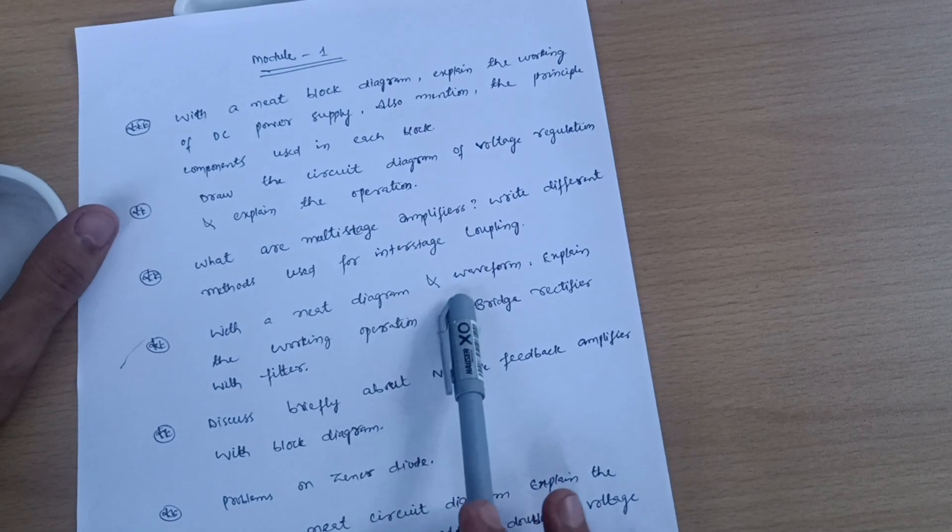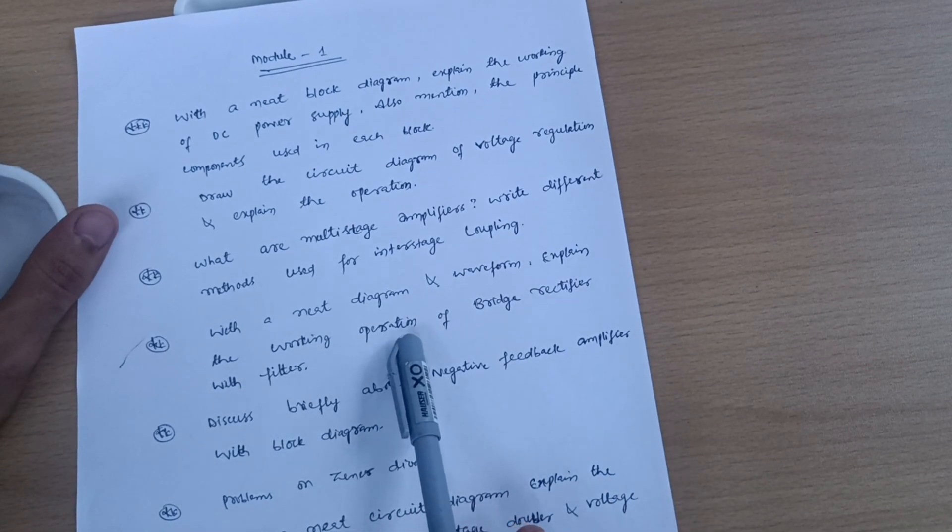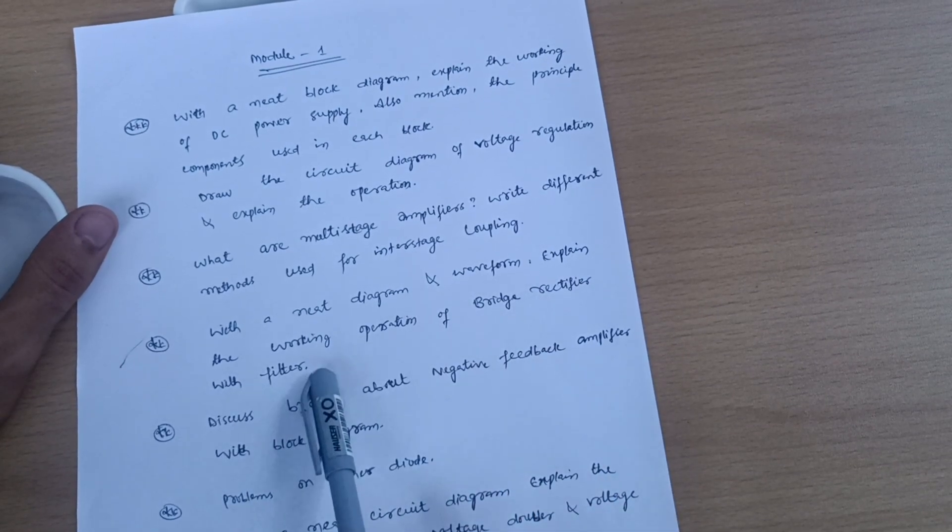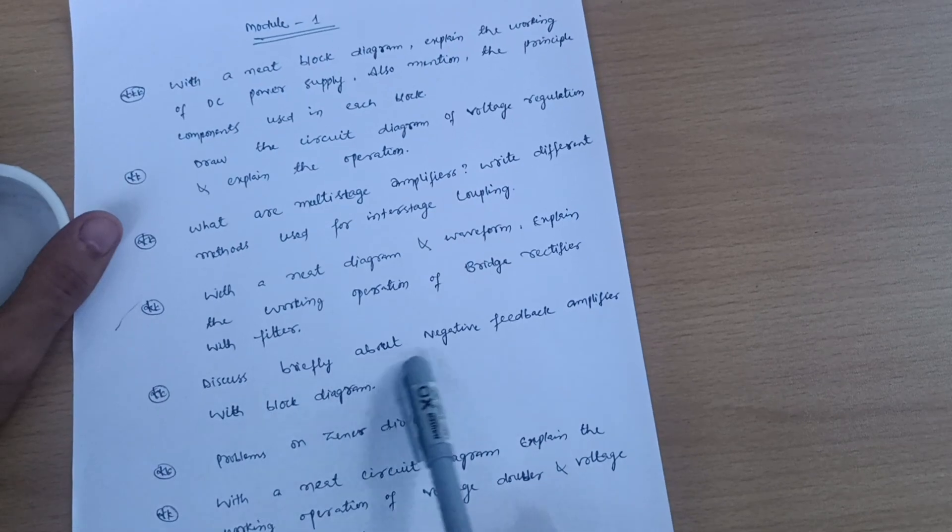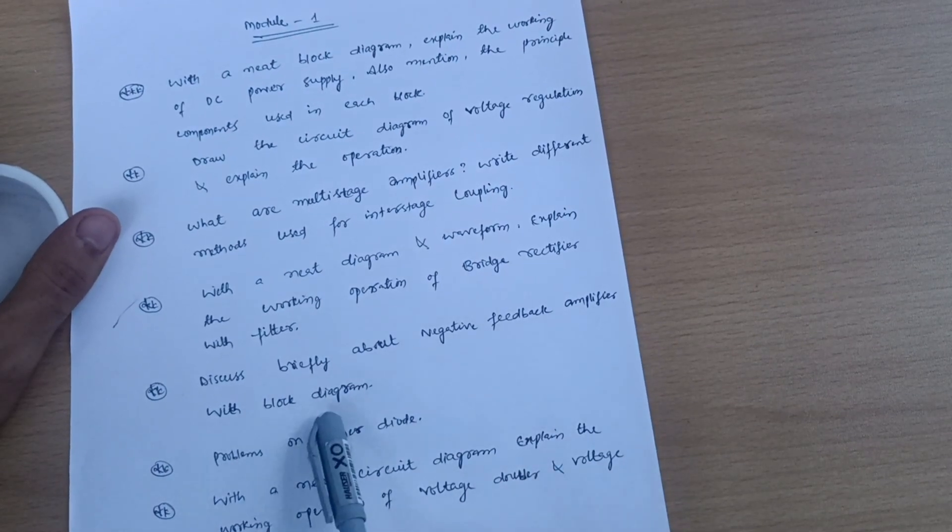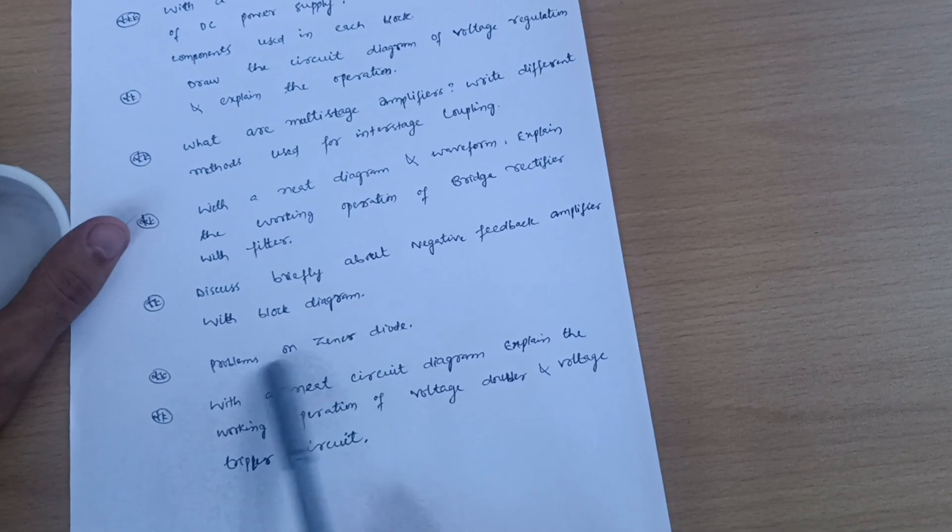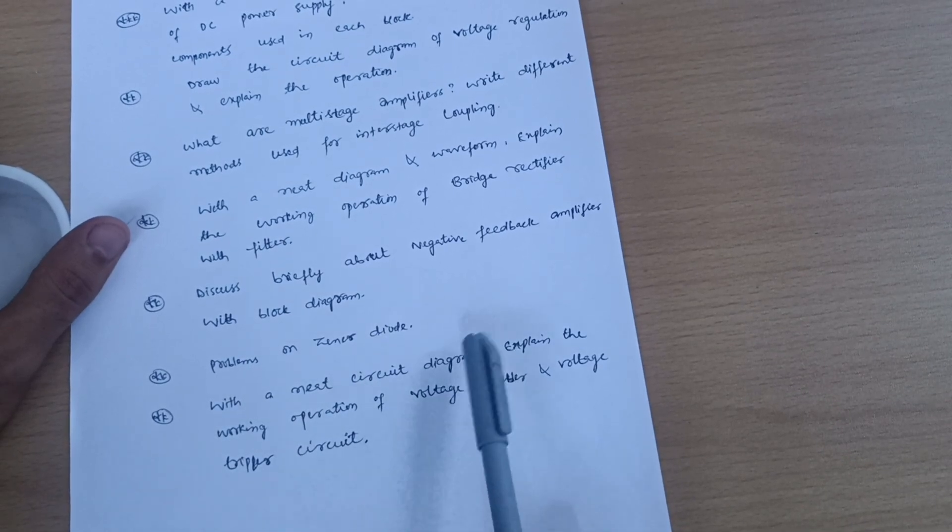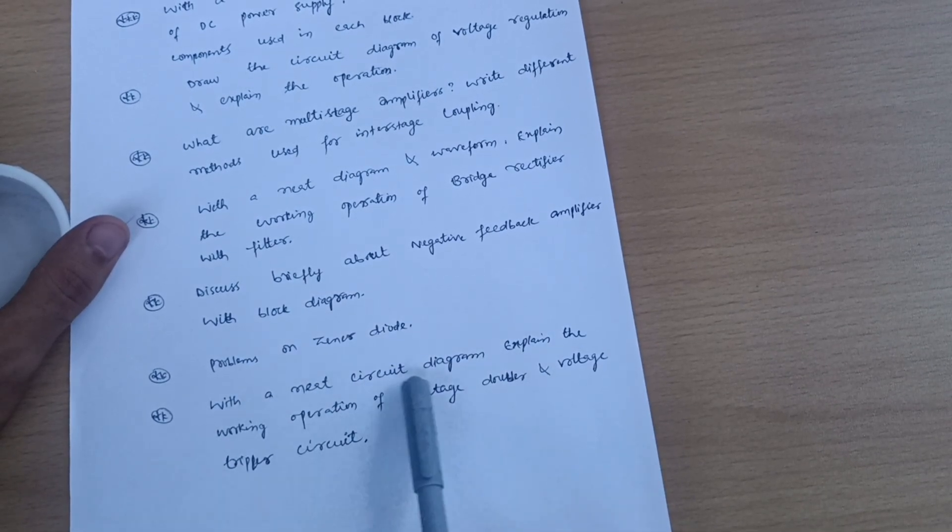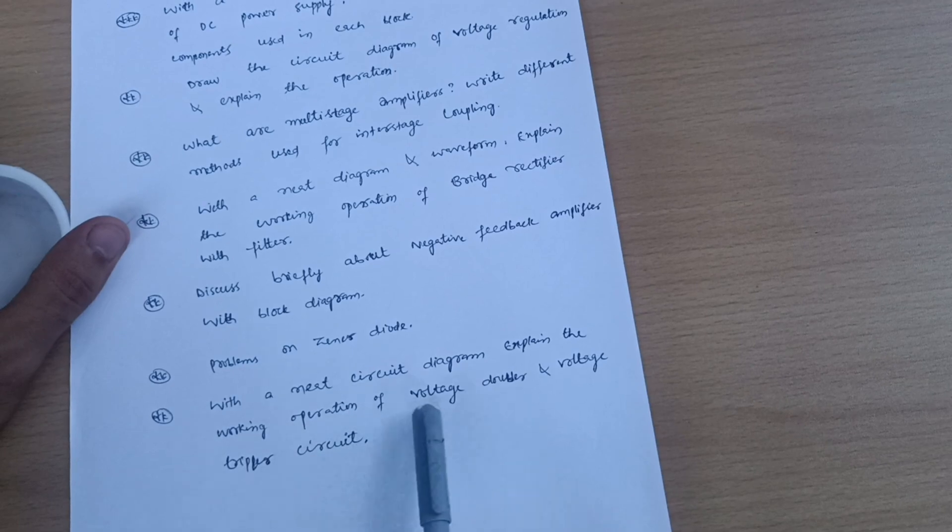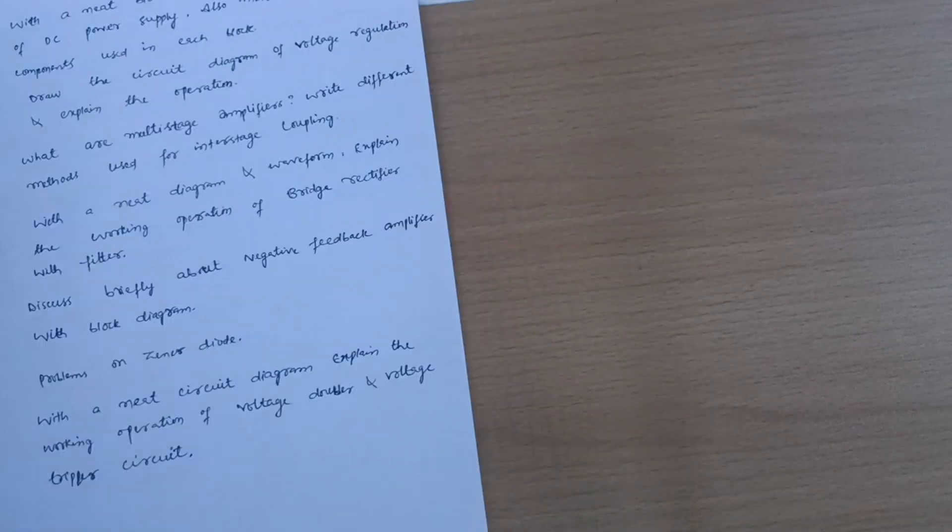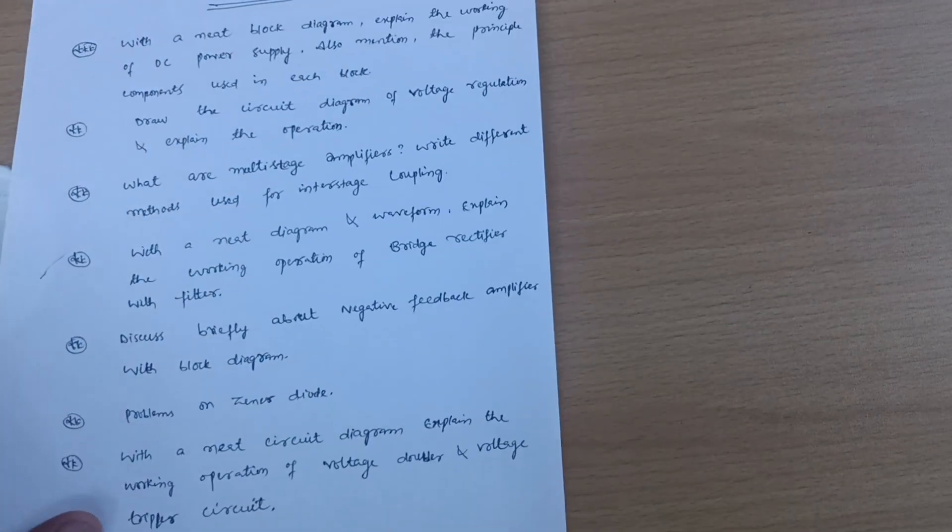With neat diagram and waveform, explain the working operation of bridge rectifier with filter. Discuss briefly about negative feedback amplifier with block diagram. Some problems on Zener diode if you are convenient, otherwise leave the problematic part. With neat circuit diagram, explain the working operation of voltage doubler and voltage tripler circuit.